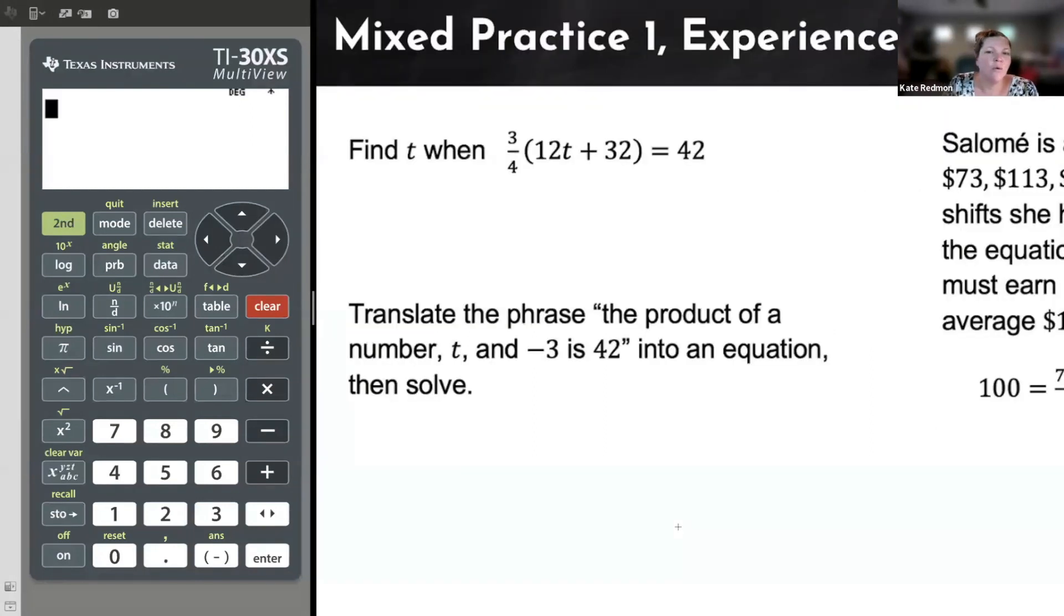Find T when 3/4 times the quantity of 12T plus 32 equals 42. A lot of students panic here at the sight of the fraction. This is a very GED math typical example. It's not actually that hard of algebra, but they know that you guys kind of tense up and panic with that fraction, and so it's often included.